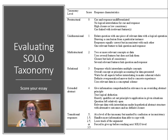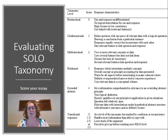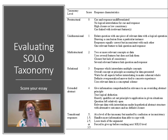The unistructural response scores a 1. This is where you use only one piece of evidence. For example: polar bears are adapted to their environment because they have fur that keeps them warm from the cold — one piece of evidence and a conclusion. Or: polar bears are not adapted to their environment because it's really cold in the Arctic and they are dying. One piece of evidence, one conclusion.